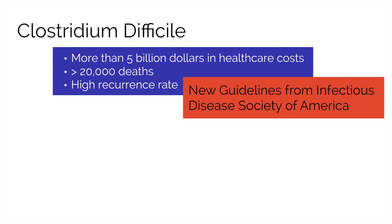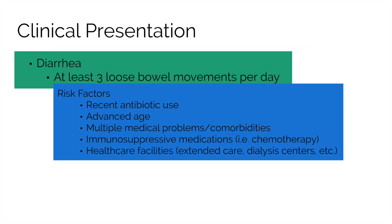Whenever a person presents with diarrhea, we need to think about infection as the number one differential diagnosis. It is important to investigate what someone means by diarrhea. Those with at least three loose bowel movements per day should be considered for testing for C. diff. Risk factors include recent antibiotic use, advanced age, multiple medical problems, use of immunosuppressive medications like chemotherapy, and exposure to a healthcare facility like a hospital, extended care facility, or dialysis center.